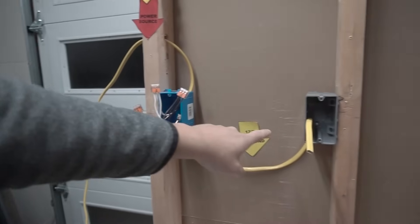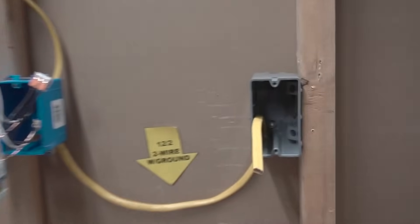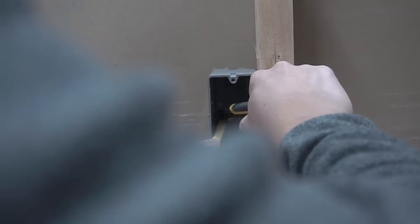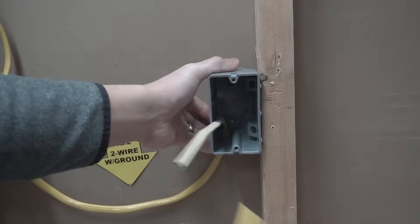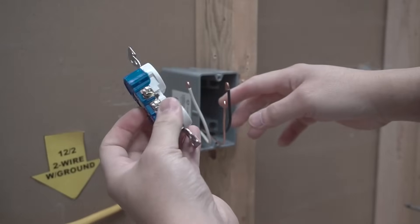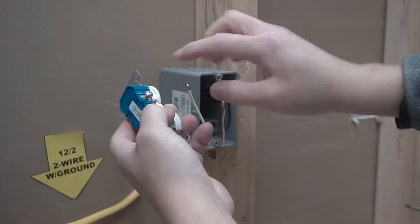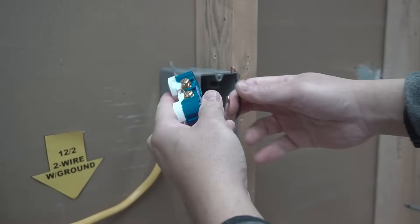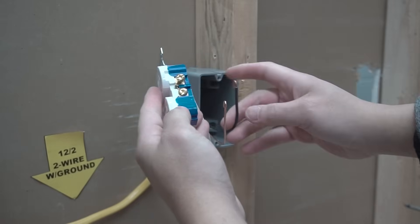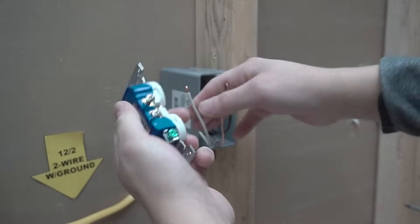We're going to go follow this 12-2 and now we're going to strip this one. We're going to take our outlet or receptacle and we're going to just put the neutral on the silver and the hot on the brass. We're going to do it on the clockwise position.